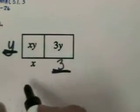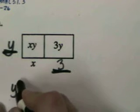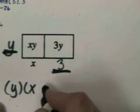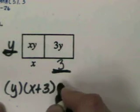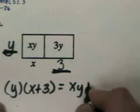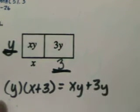And then y times what gives us 3y? So my rule's going to be, not my rule, my products, or factors, x plus 3 times y will equal xy plus 3y.